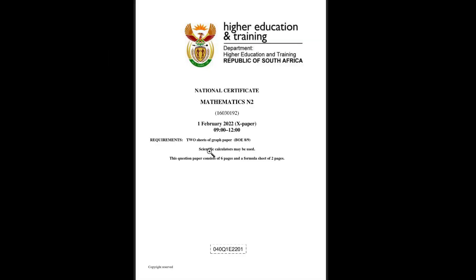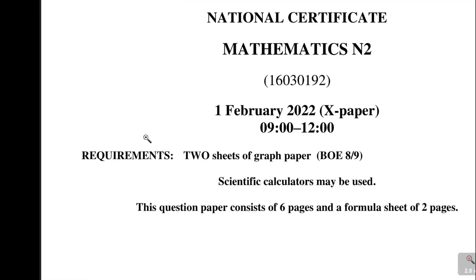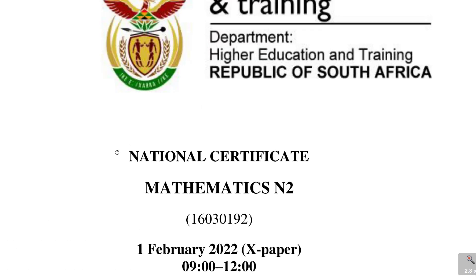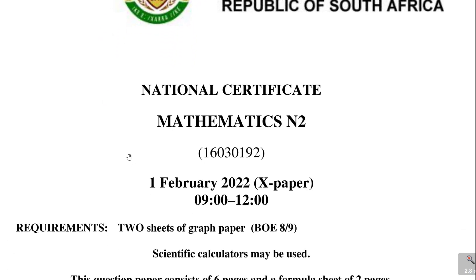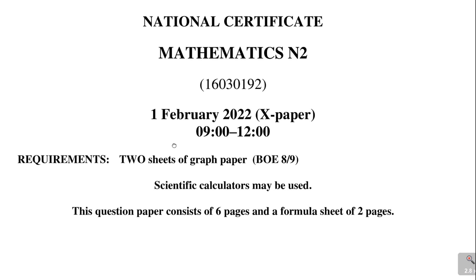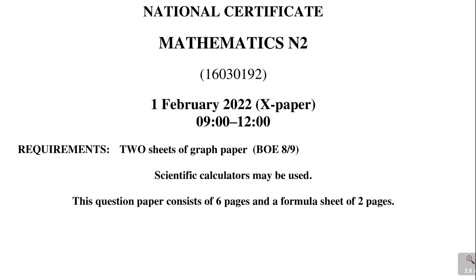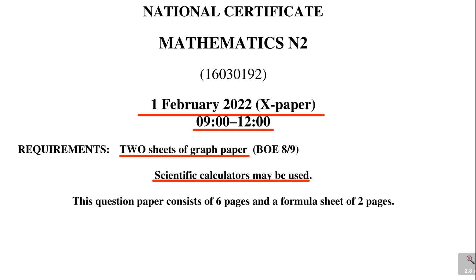I'm bringing you the revision of this paper so that you can prepare for your final exam. This was the Mathematics N2 question paper — a national certificate. It was written on the 1st of February 2022 in the morning. X means the morning paper and it's a three-hour paper. You need two sheets of graph paper, which they will provide, and you need to bring your own scientific calculator.